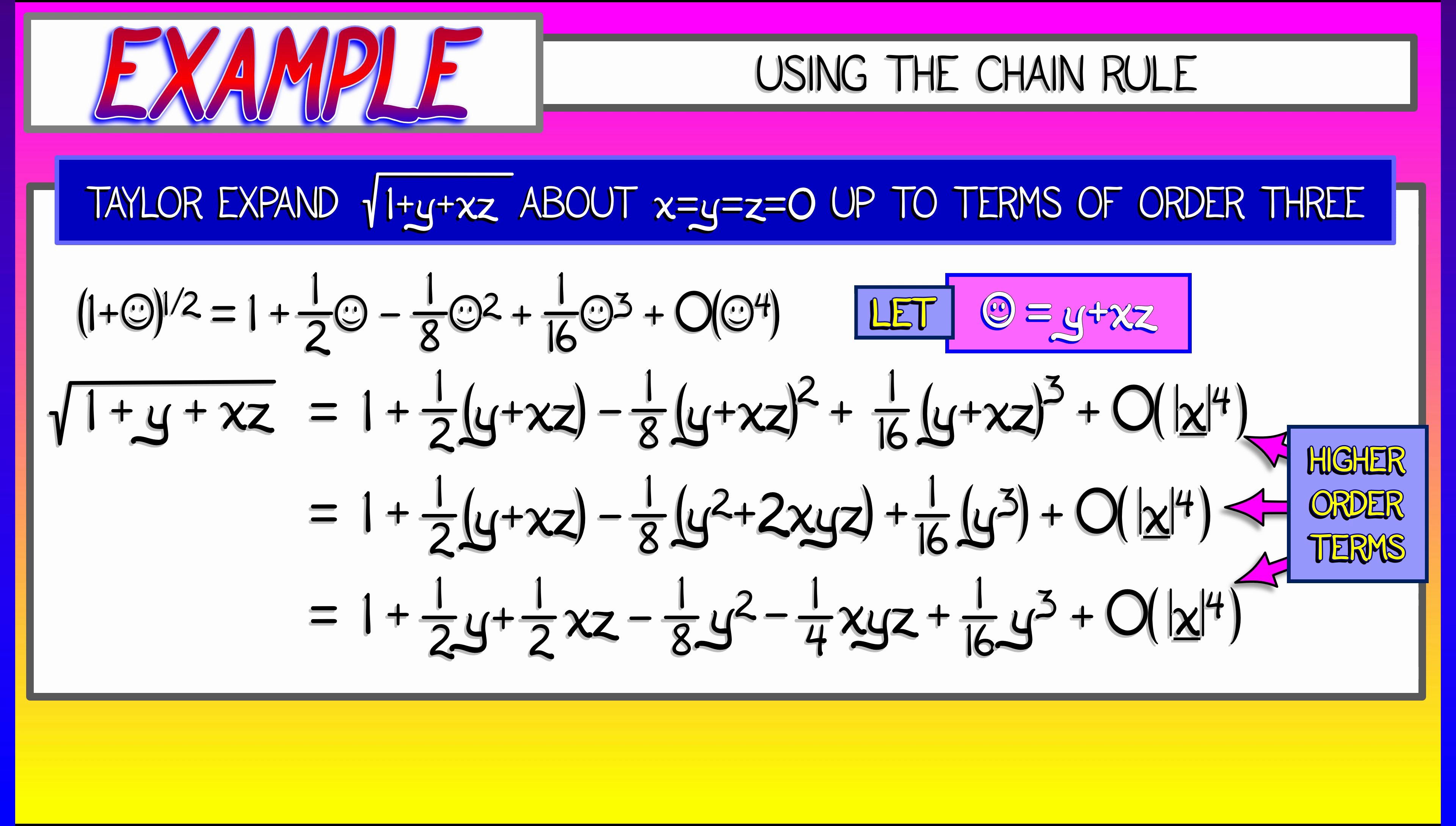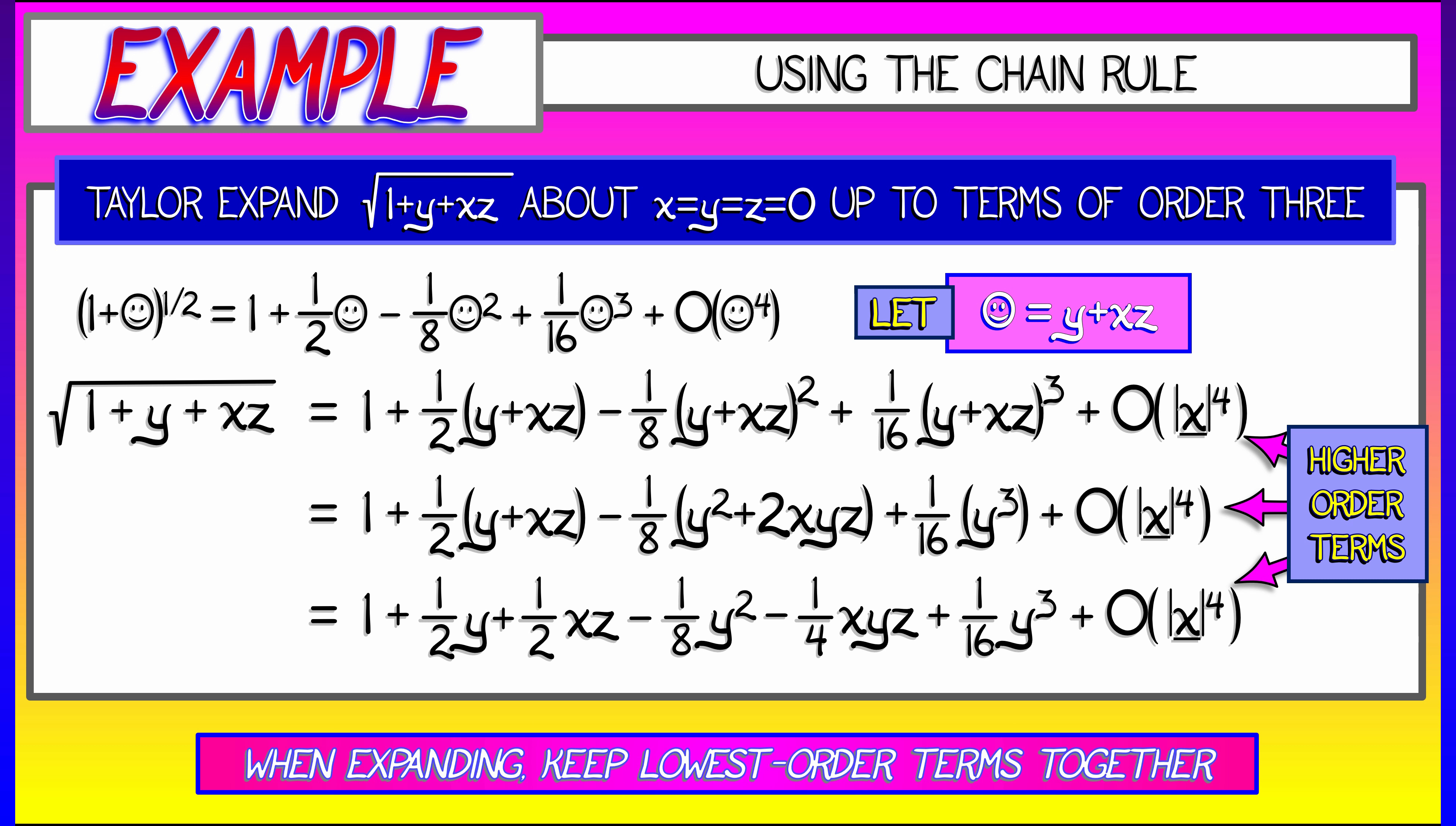And then, in order to have good bookkeeping, keep everything nice and neat, put the lowest order terms first and arrange them nicely so that you get a final answer of 1 plus y over 2 plus x times z over 2 minus y squared over 8 minus 1 fourth xyz plus y cubed over 16. Everything else, fourth order and higher.